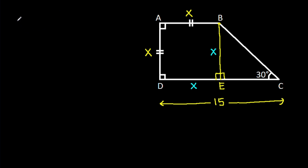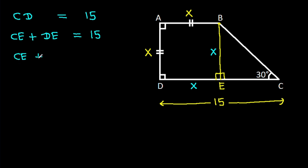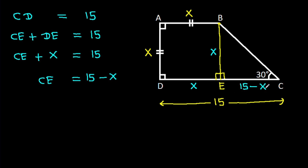Now, we have CD is 15 and CD is CE plus DE equals 15. So CE will be 15 minus X.